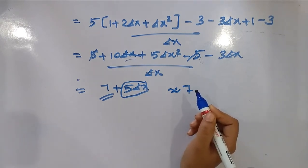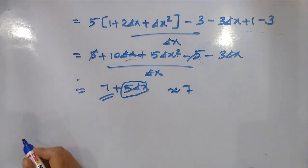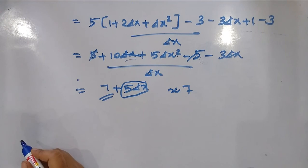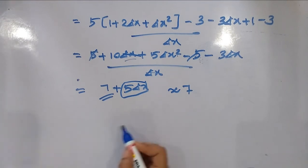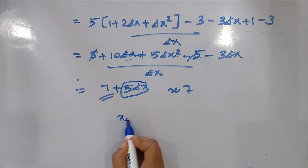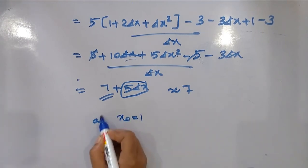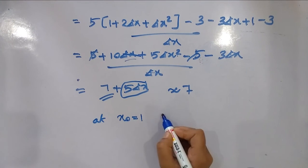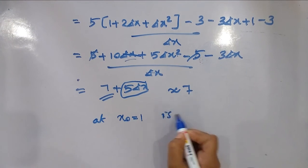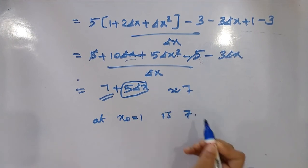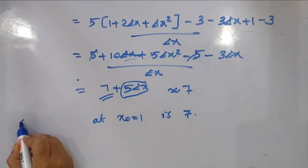Hence, the required slope of the tangent to the graph of the given function at x₀ = 1 is 7.